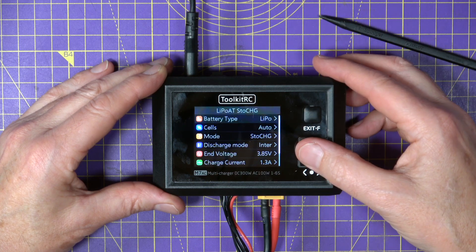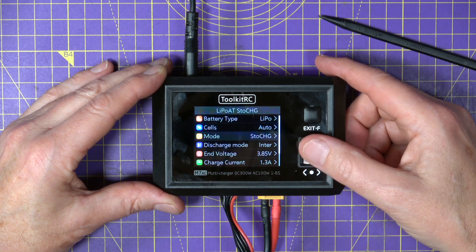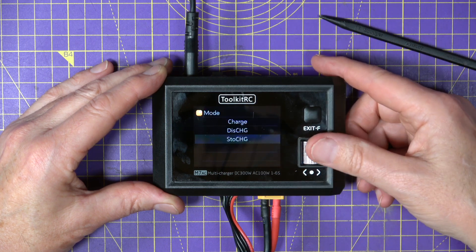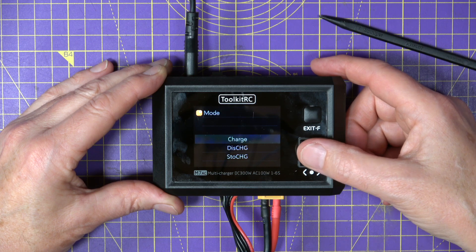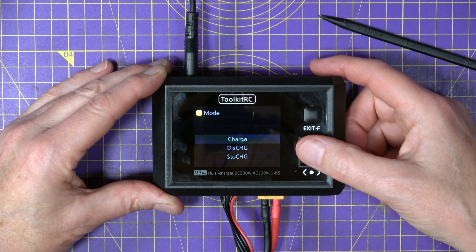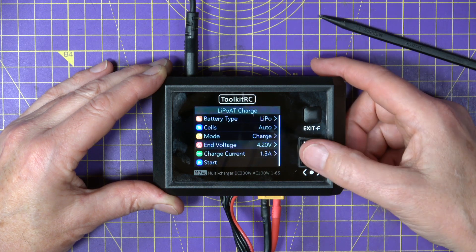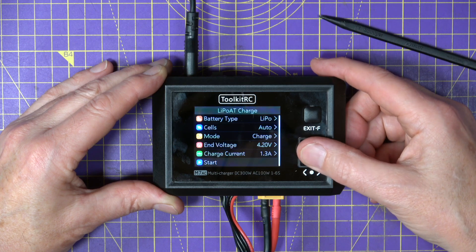The fan comes on at a preset temperature which you can change if you want to. So to start charging you just click and we are going to charge lipo auto, it picked up the fact it's got four cells. Now on here you can charge, discharge or storage charge. I've got this set to storage charge because I was recently just bringing a lot of my batteries down to storage ready for winter storage. So let's put this on charge, we're on 4.2 volts and the charge current's 1.3 amps, hit start.